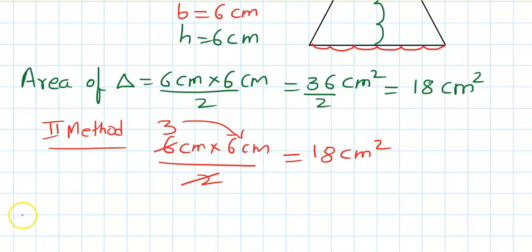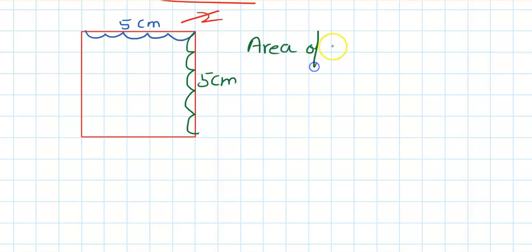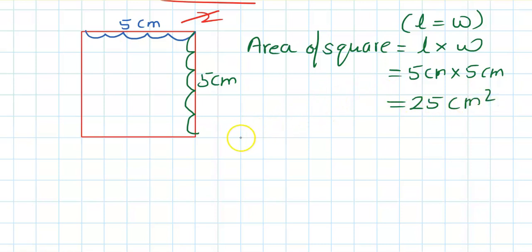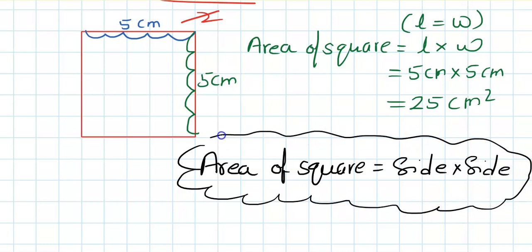Now let's move to the area of a square. This side is 1, 2, 3, 4, and 5 — so 5 centimeters. The other side is also 1, 2, 3, 4, and 5 — so also 5 centimeters. The area of a square uses the same formula as a rectangle: length times width. But since length equals width, you can say area of square is side times side. So 5 times 5 is 25 centimeter square.